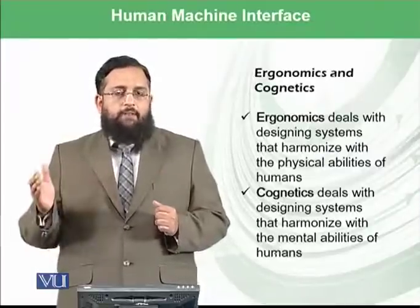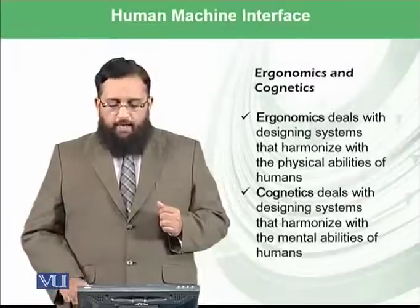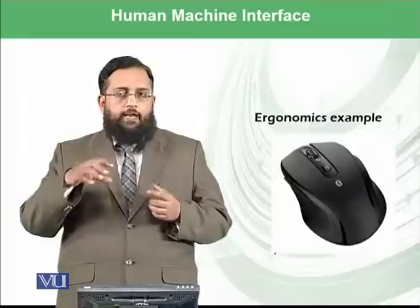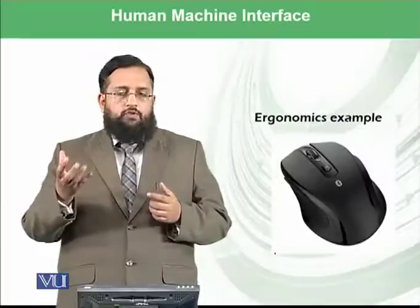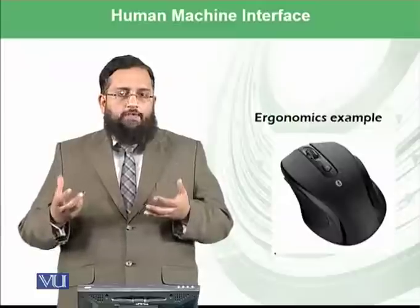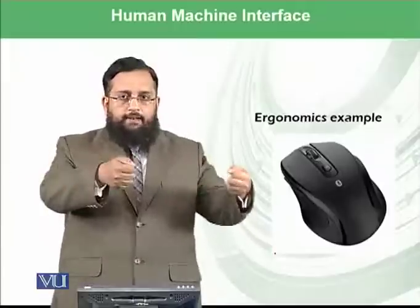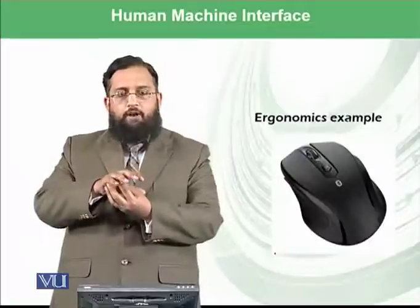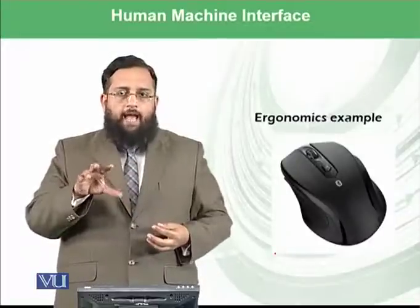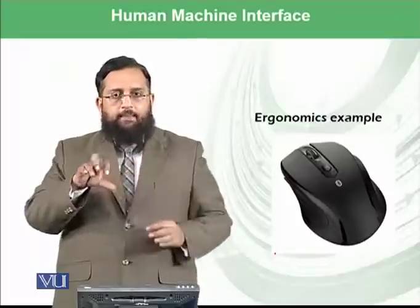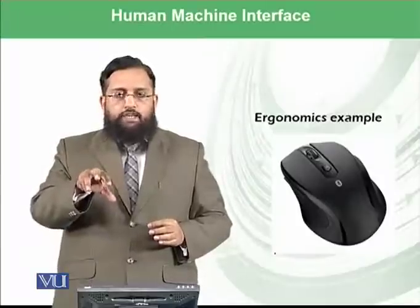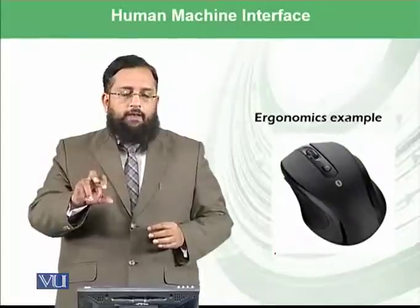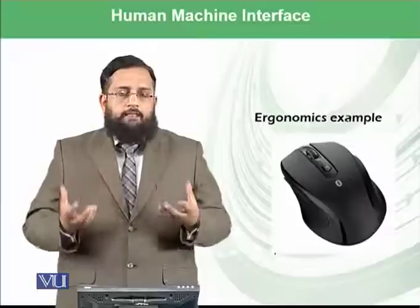We discussed the mental abilities of the user in the previous slide. Now let's look at ergonomics. For example, we have designed the mouse, which needs to be held in one hand. Someone didn't make the mouse like a keyboard — we point at the screen with one hand. The mouse fits in one hand and has a left click, right click, and scroll bar. All of those things can be properly used under one hand, so you can click left, click right, and scroll.